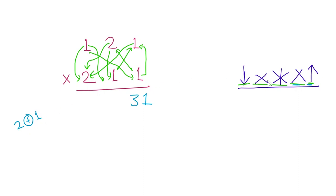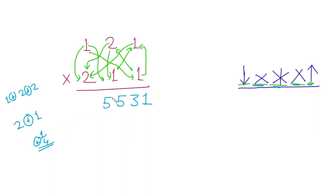Then coming to the next step, we multiply 1 by 1 which is 1, then 2 by 1 which is 2, and then 2 by 1 again which is 2. Adding these gives a total of 5, so we write 5. Then for the next step, 1 multiplied by 1 is 1 and 2 multiplied by 2 is 4, so 4 plus 1 is 5, we write 5. The last step is the down arrow: 1 multiplied by 2 is 2, so we write 2.